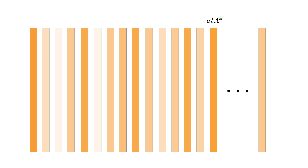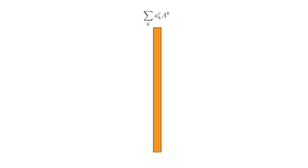We have 64 feature maps, and we refer to an arbitrary map as A^K. To create a GradCAM heatmap, we first weight each feature so each element has the same weighting. We then do element-wise summation to produce one matrix of elements, which we call the weighted feature map.